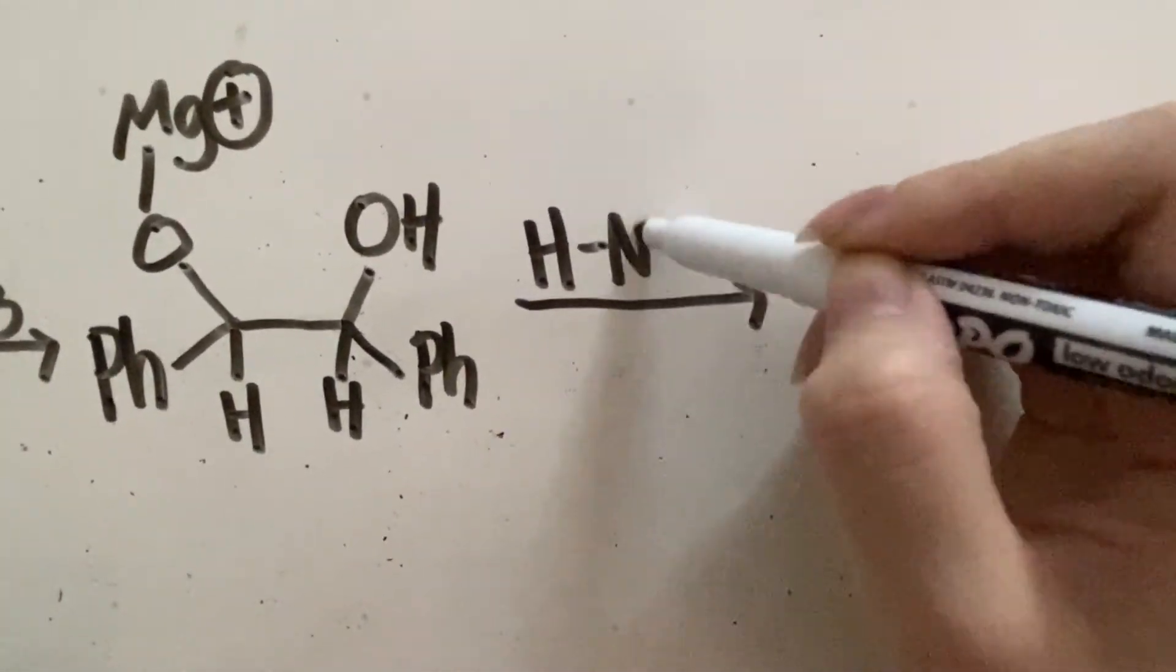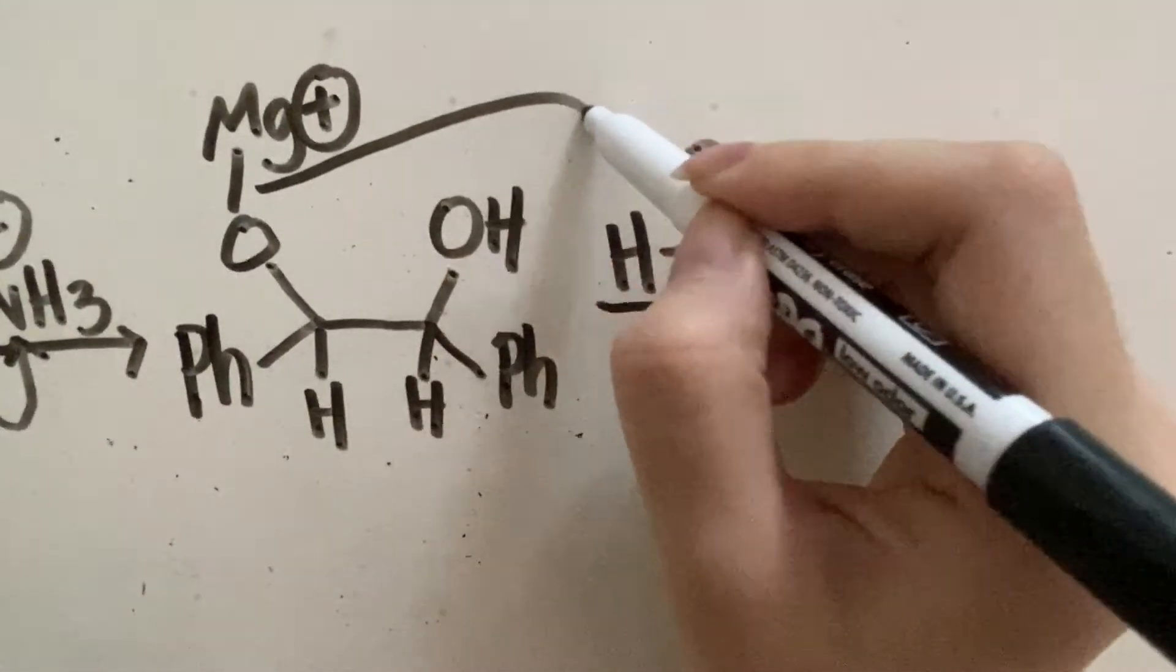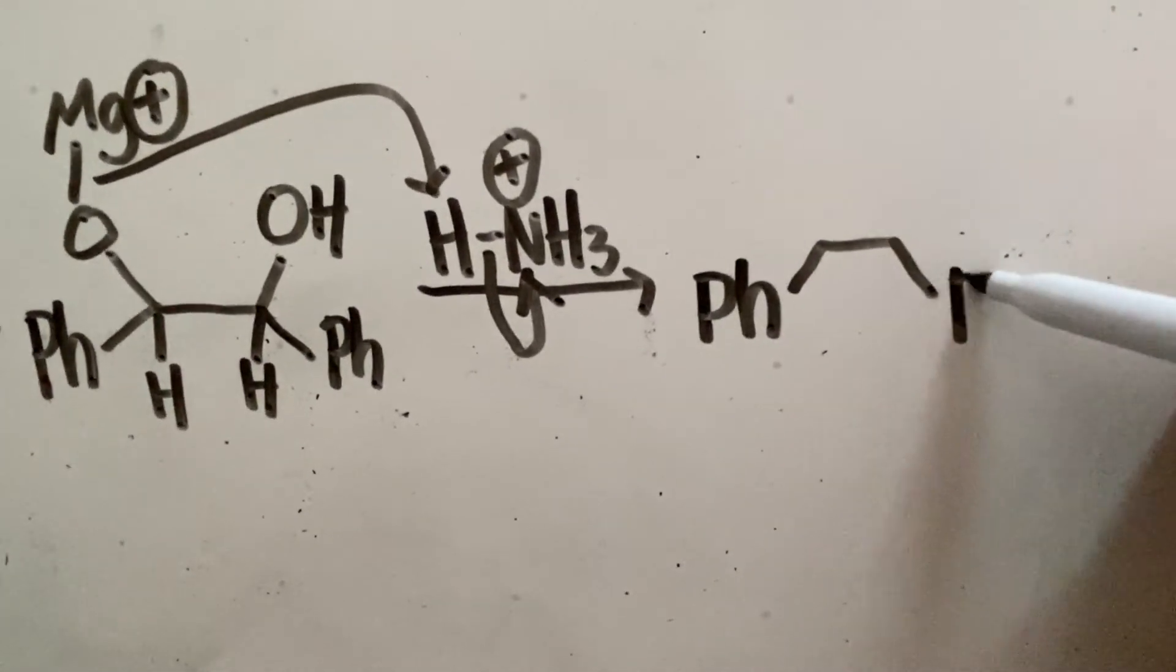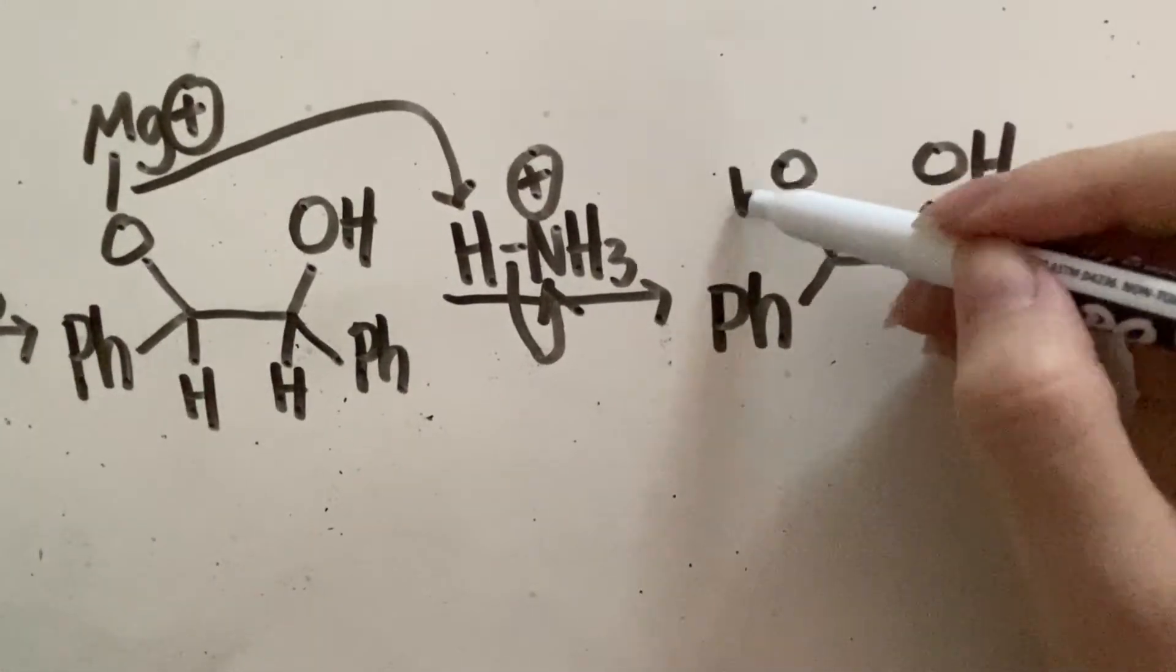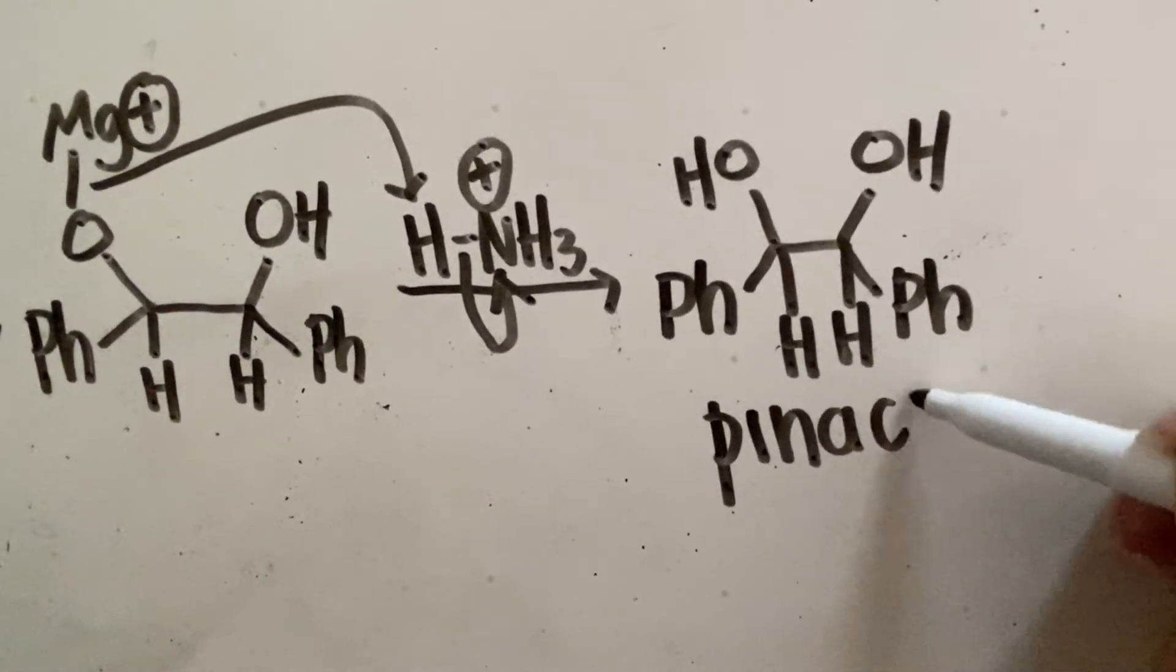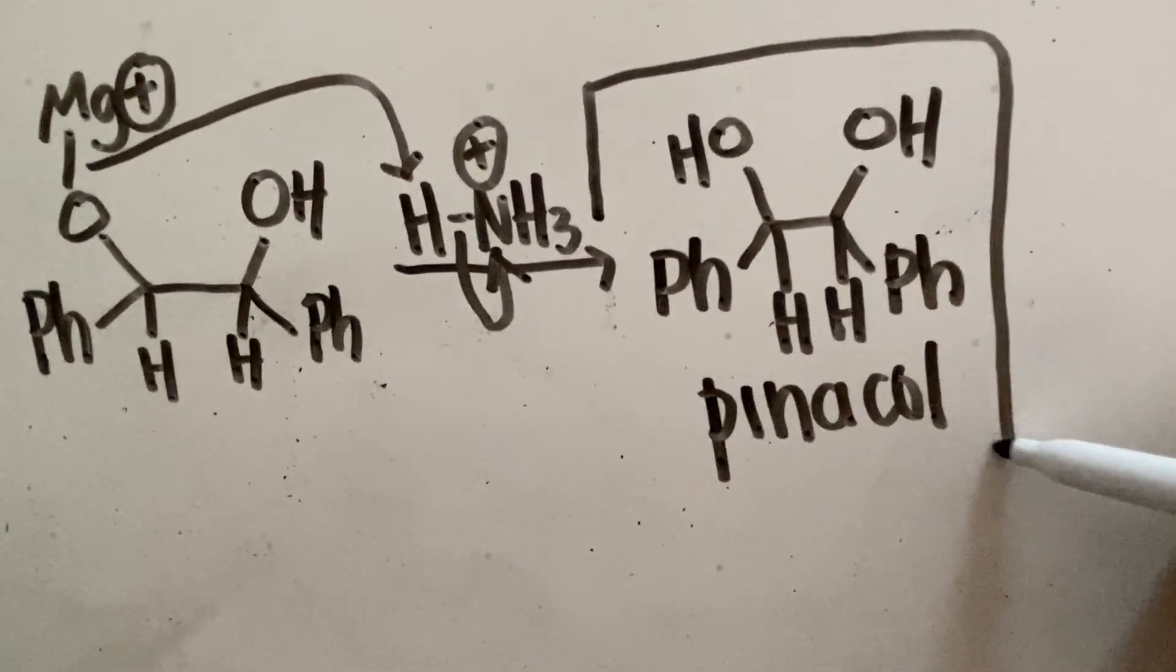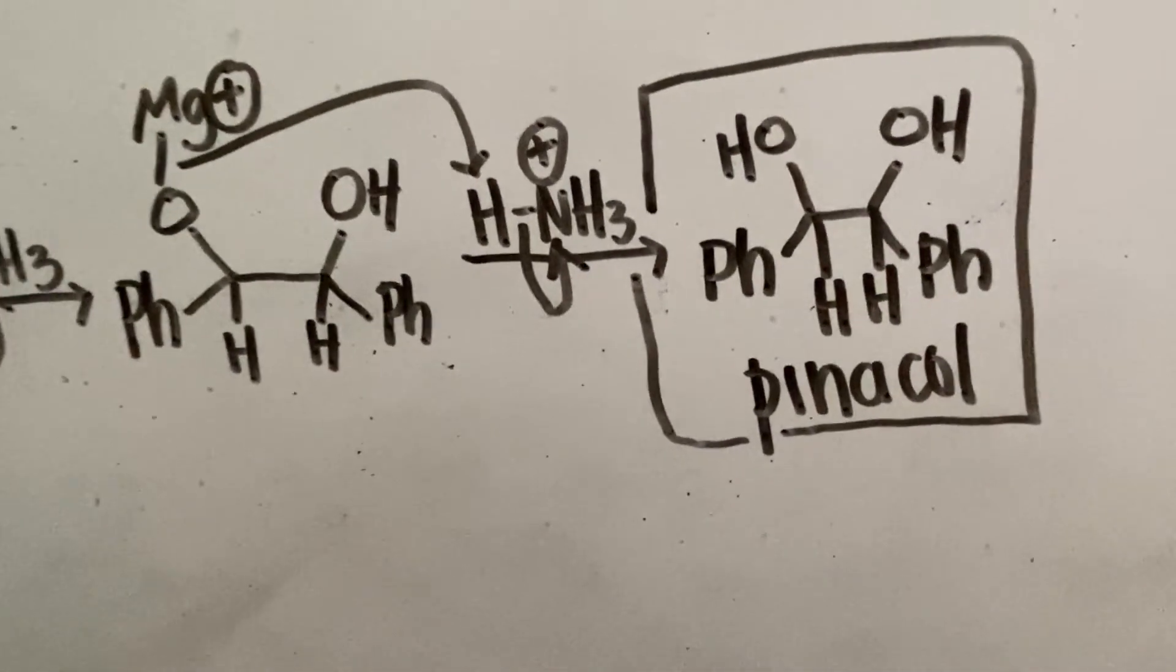This reaction with ammonium happens again with the second oxygen atom. And finally, you get the final product, 2,3-diphenylbutane 2,3-diol. And that's it, that's the whole mechanism.